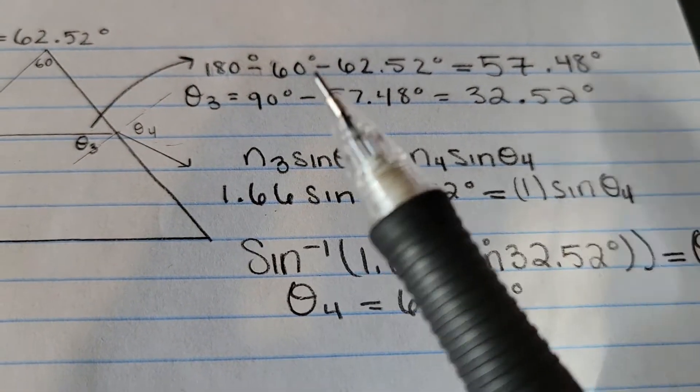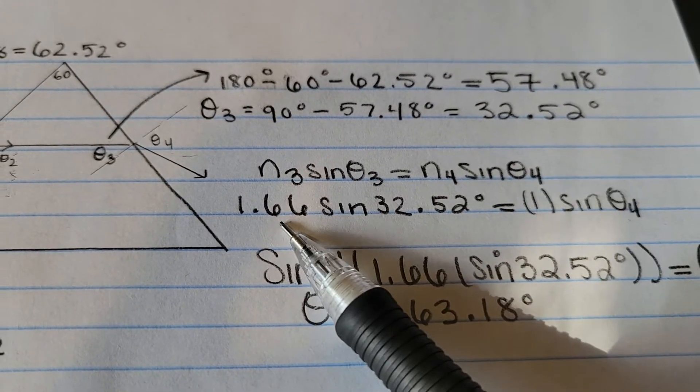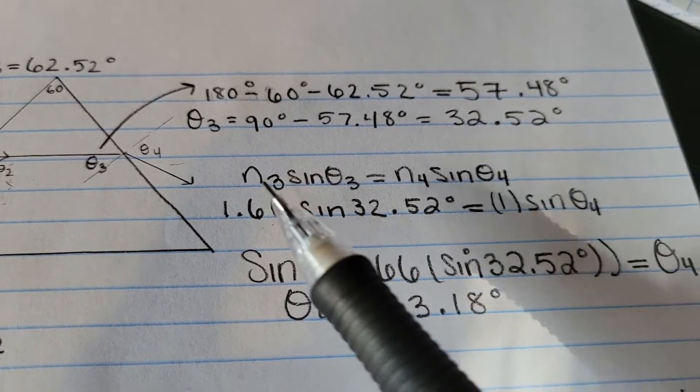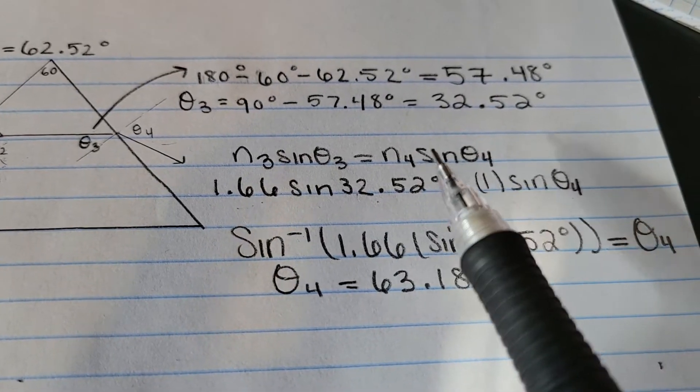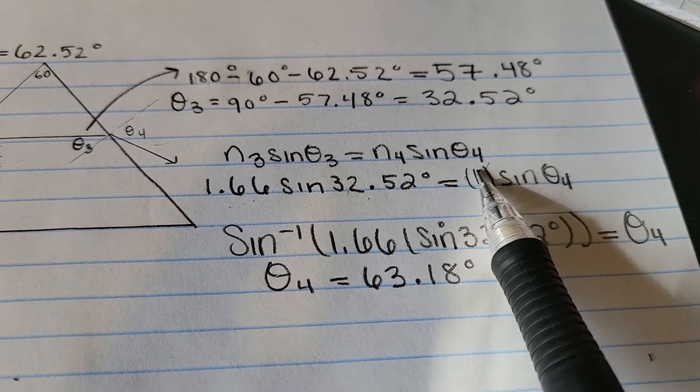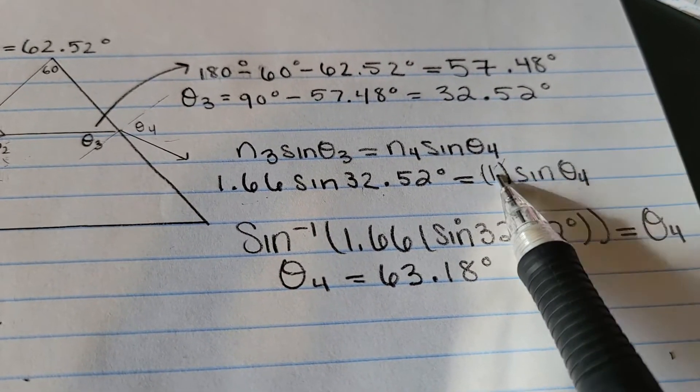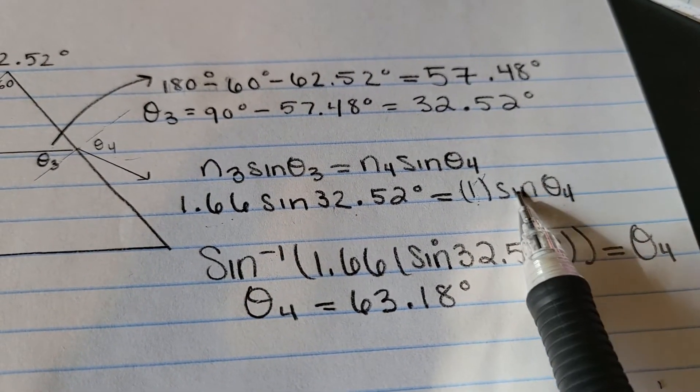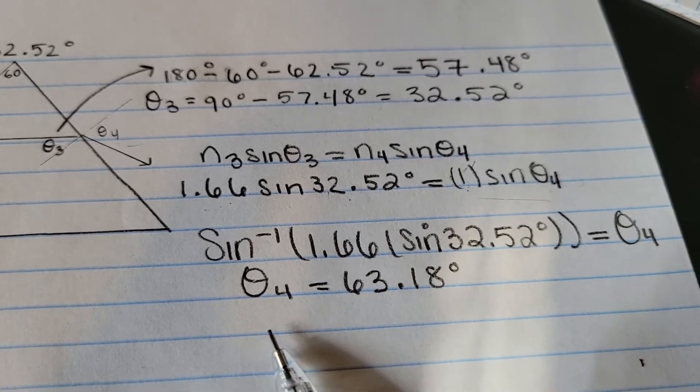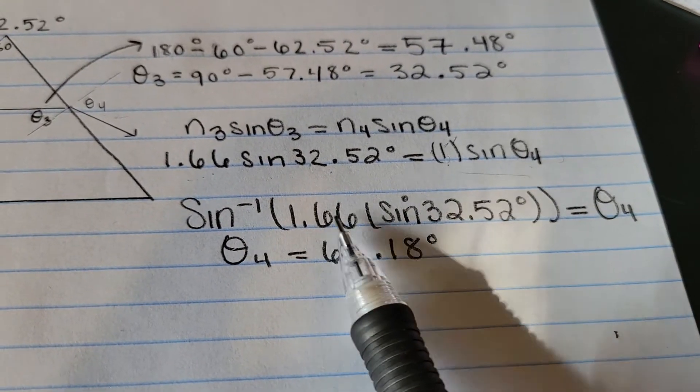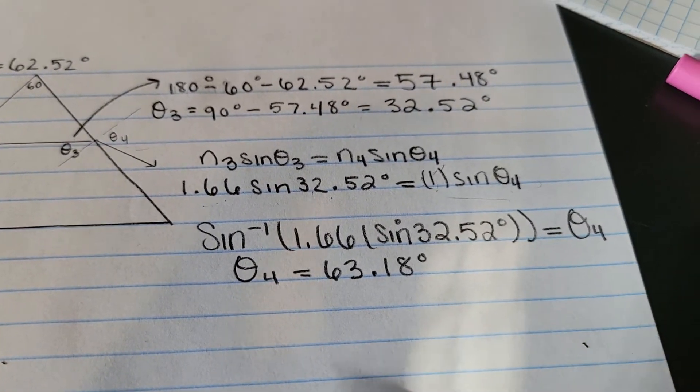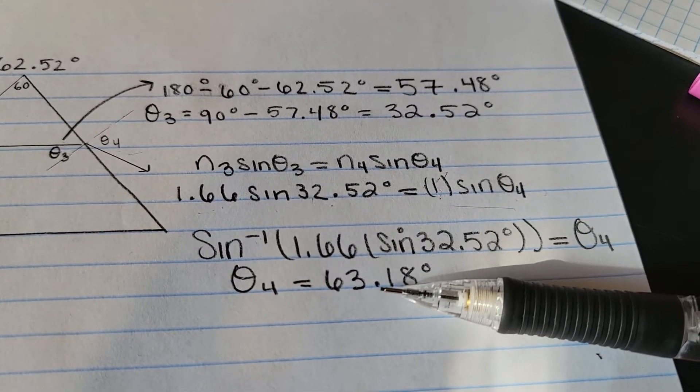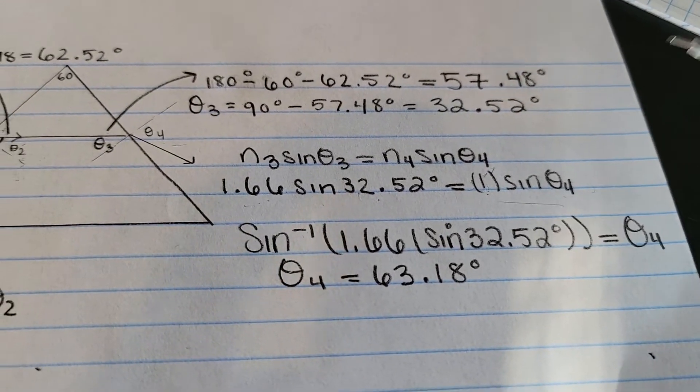Since we're starting off from the index of refraction of violet, we can just set that equal, multiply that by that, and then this is coming out of air, so the index of refraction is 1. You take the inverse sine in order to find the theta 4. So inverse sine of 1.66 times sine 32.52 degrees. We get that the fourth theta is 63.18.